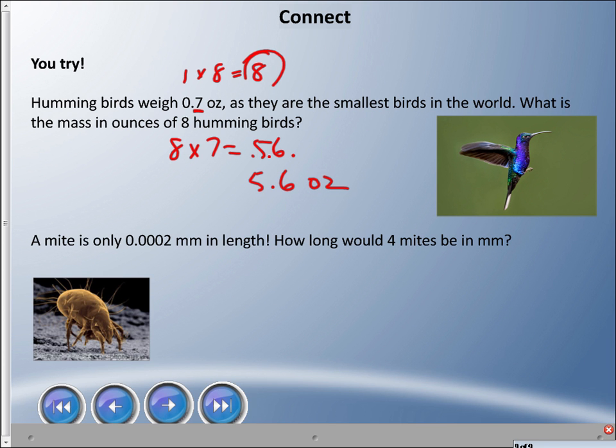How about this one? A mite is only 2 ten thousandths of a millimeter in length. I want you to imagine a millimeter and think of that really small number of a millimeter. How long would 4 mites be in millimeters? I do recommend the estimation or counting decimal places. And, in fact, I would actually recommend just counting decimal places. We have 4 decimal places here to consider. So try it out. I have 4 decimal places. I'm doing 2 times 4 equals 8. Now, I have 8, but I need 4 decimal places. So, that means that I'm going to have to do this to find my decimal places. So, the length of 4 mites is 8 ten thousandths of a millimeter.